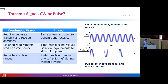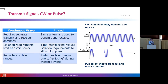In CW radars we need separate transmit and receive antennas, but in a pulse radar we use one antenna for both transmission and reception. For some amount of time we are transmitting, then we switch and become a receiver. If we are using all time for transmission, in principle we cannot receive anything, so we have something called the blind range — a range where we cannot detect objects.